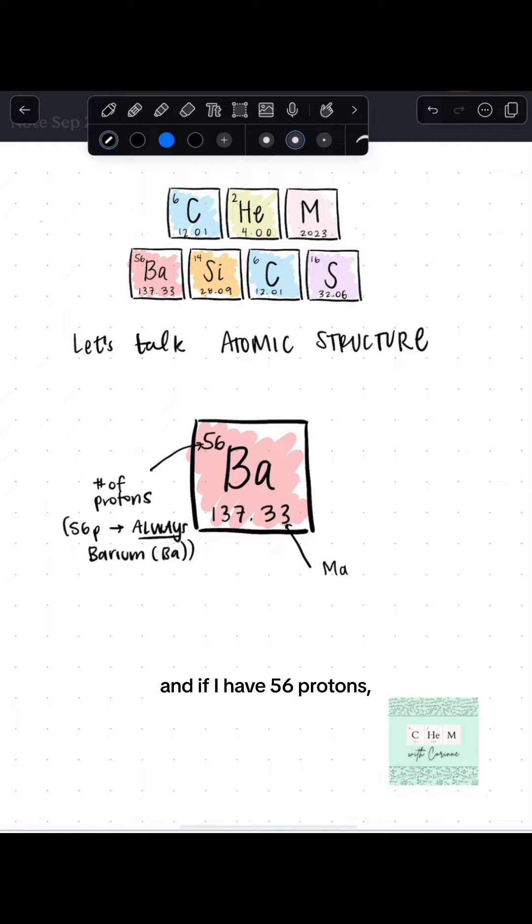And if I have 56 protons, it can only be barium. If I change the number of protons, I'm changing the identity of the element.